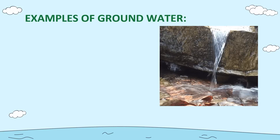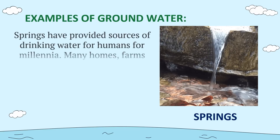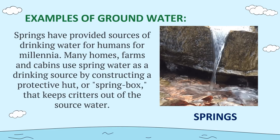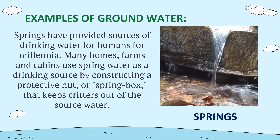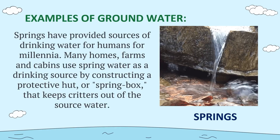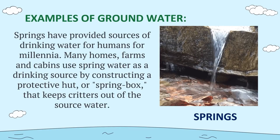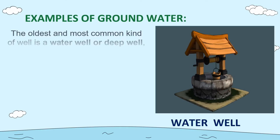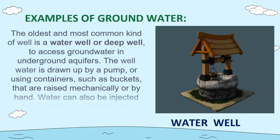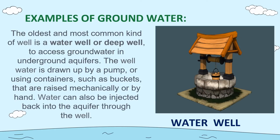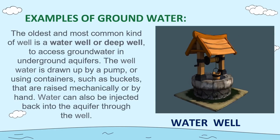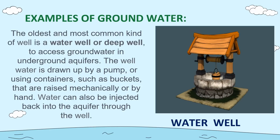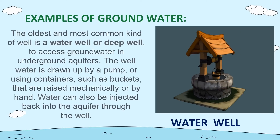Another example of groundwater is springs. Springs have provided sources of drinking water for humans for millennia. Many homes, farms, and cabins use spring water as a drinking source by constructing a protective hut or spring box that keeps critters out of the source water. Another example is a water well. The oldest and most common kind of well is a deep well used to access groundwater in underground aquifers. The well water is drawn up by a pump or using containers such as buckets raised mechanically or by hand.